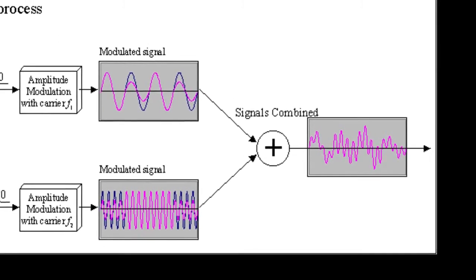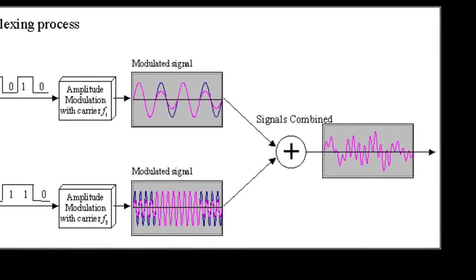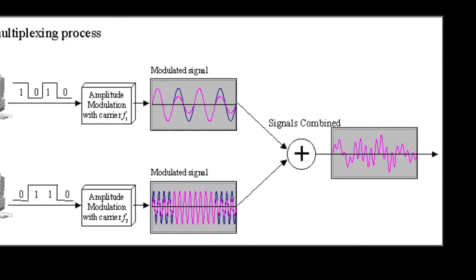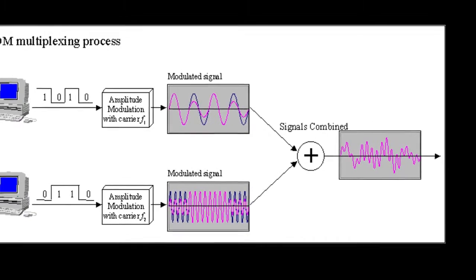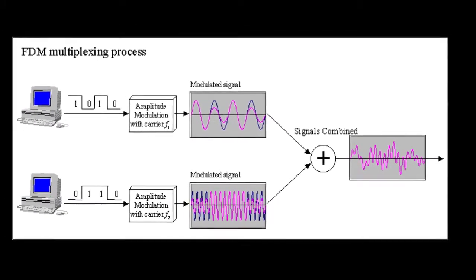These signals are then transmitted over the wire or through wireless communication and are separated at the destination into individual data signals using a demultiplexer.